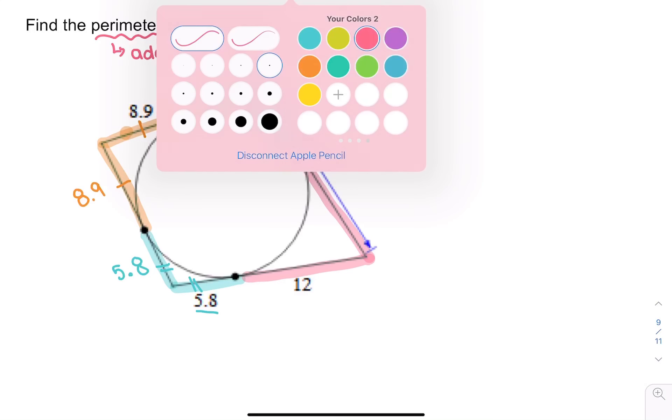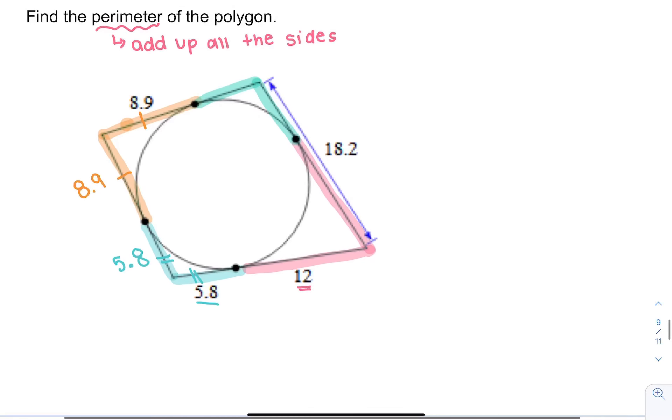In pink, they said this one's 12. Well, if that one's 12, this one's also 12. And this is where it gets a little tricky. Now they're telling me that 18.2 is the entire line. Well, if 18.2 is the entire line and I want to know what this side is, to figure it out, I'll do 18.2 minus the pink part, minus 12, which is 6.2.